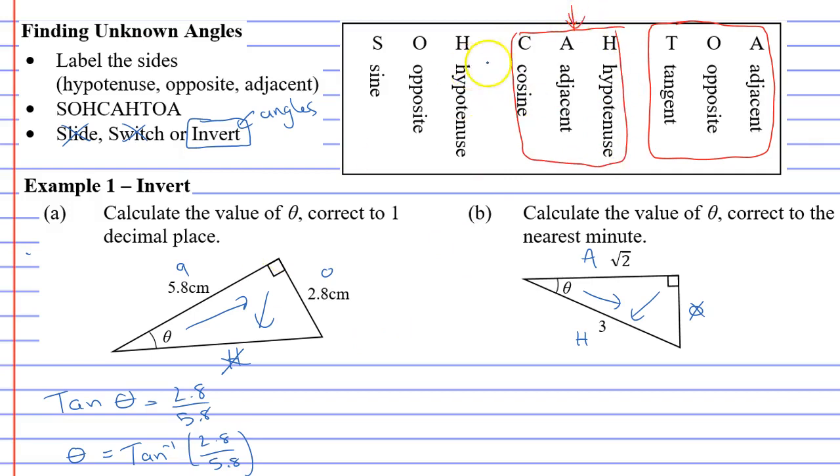So we're going to use C for cos. Cos then the angle theta equals vinculum bar A then H. So A is root 2, H is 3.